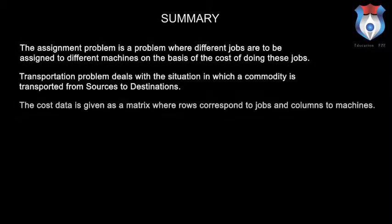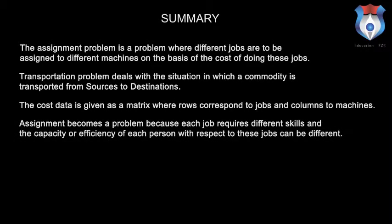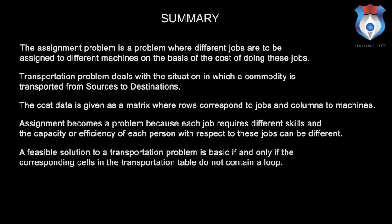Summary: The assignment problem is a problem where different jobs are to be assigned to different machines on the basis of the cost of doing these jobs. The transportation problem deals with the situation in which a commodity is transported from sources to destinations. The cost data is given as a matrix where rows correspond to jobs and columns to machines. Assignment becomes a problem because each job requires different skills and the capacity or efficiency of each person with respect to these jobs can be different. A feasible solution to a transportation problem is basic if and only if the corresponding cells in the transportation table do not contain a loop.